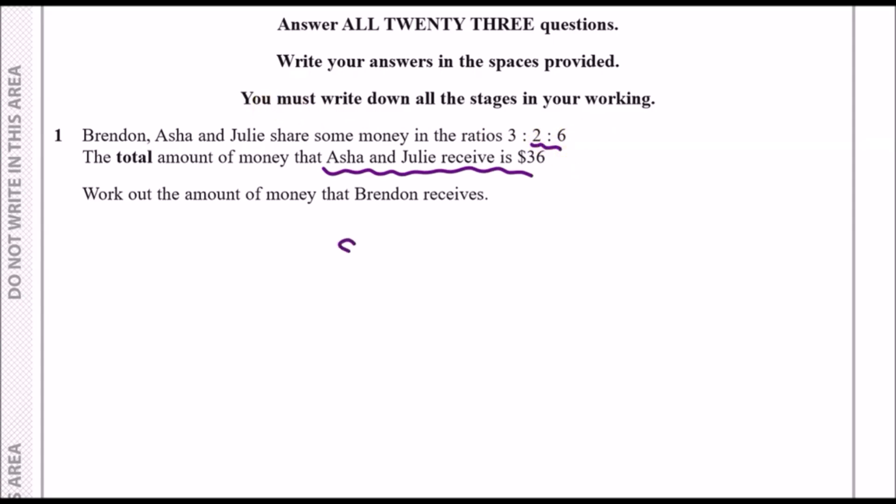It tells us that the total, in other words both parts, so 2 plus 6 which is 8 parts, must be equal to $36. To get every single part we should find one part. This means that one part can be found if we divide 36 by 8.